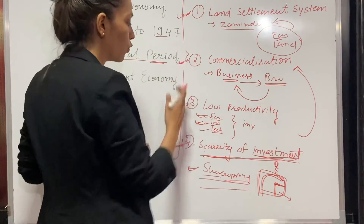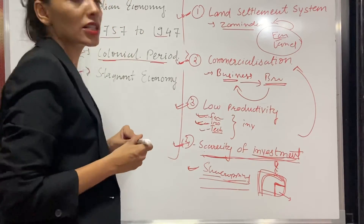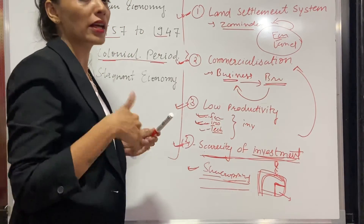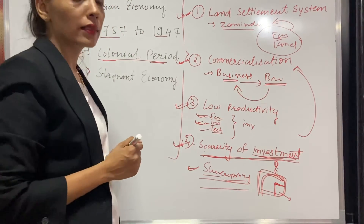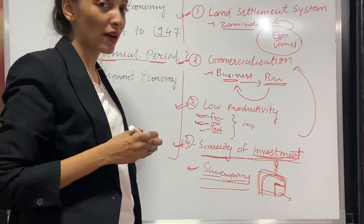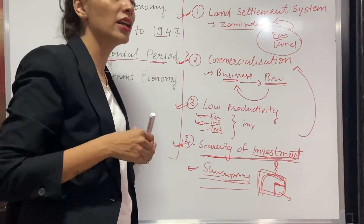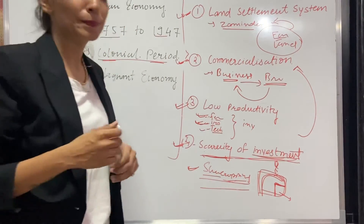These four things happened with our agriculture sector. From the next lecture, we are going to learn what happened with our industrial sector and what they have done with our industries. Thank you.